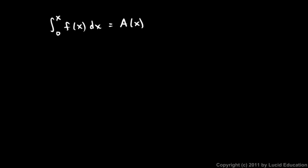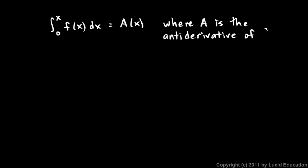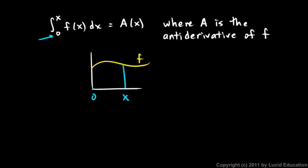We're still talking about the fundamental theorem of calculus. So far we have established that the integral from 0 to x of f(x) dx is equal to A(x), the area under the graph of f, where A is the antiderivative of f. We have some function f, and if we start at 0 and go up to some point x, that area is given by the antiderivative of the original function.